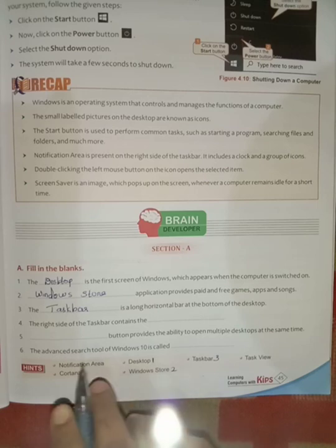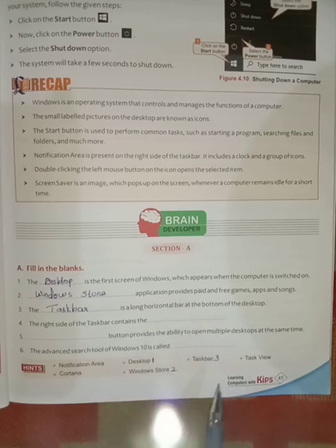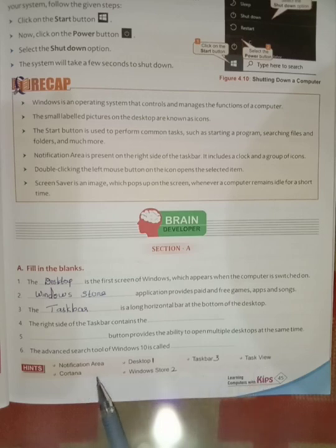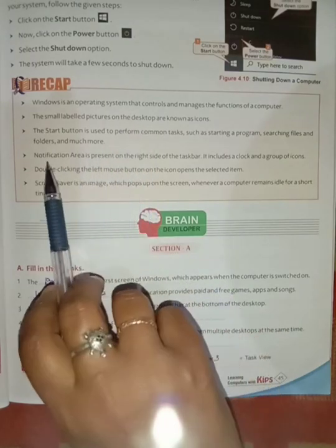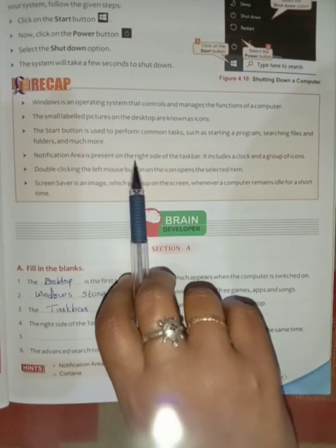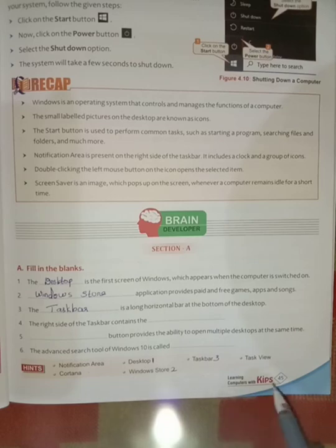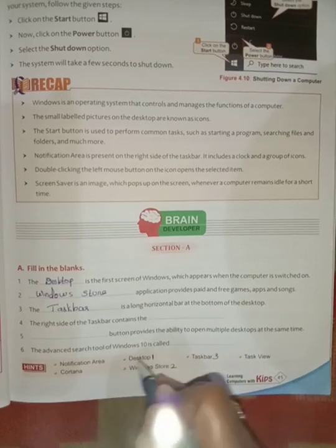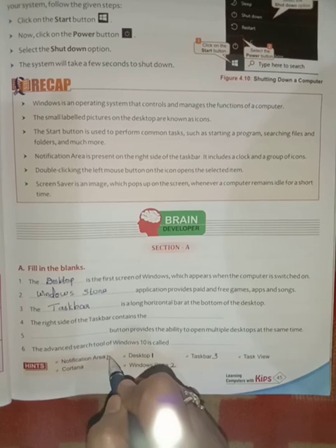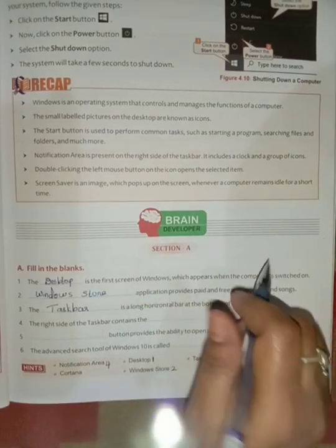Now the fourth one: the right side of the taskbar contains the dash. At the right side of the taskbar, what will be there? There will be task view, Cortana, or notification area. You all can see in the recap points — the notification area is present on the right side of the taskbar. So the right answer is 'notification area'. I will write notification area for number four.